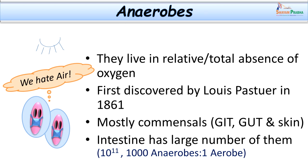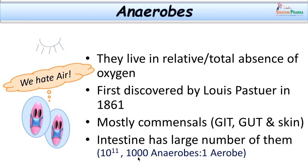Anaerobes are present on and inside the body in very large numbers. Non-sporing anaerobes outnumber aerobes in a ratio of 30 to 1000 times, and are present in large numbers in the intestines. The small intestine harbors about 10³ to 10⁴ organisms per ml of fluid, and this increases towards the large intestine where they may range up to 10¹⁰ to 10¹¹, with a ratio of anaerobes to aerobes of 1000:1. They are also present on the skin, in the mouth, and in the genitourinary tract.